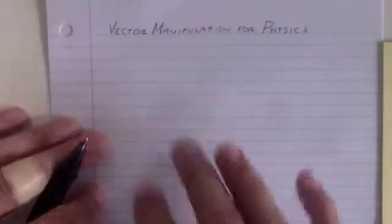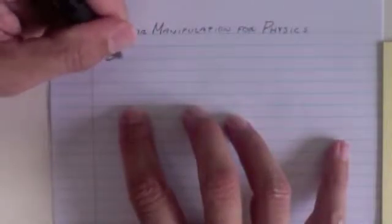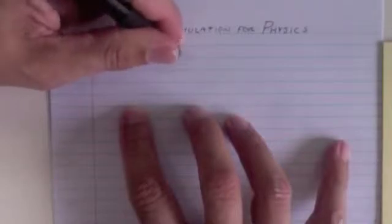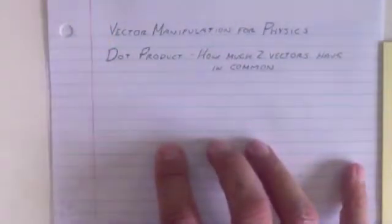The first thing is the dot product. The dot product is a way of saying how much two vectors have in common. That's just my way of thinking of it, not a standard way. The dot product is pretty straightforward.